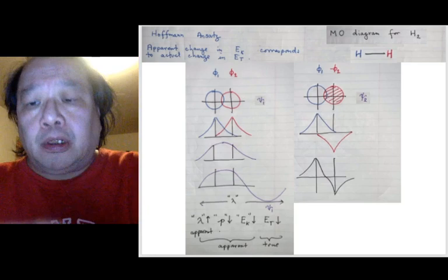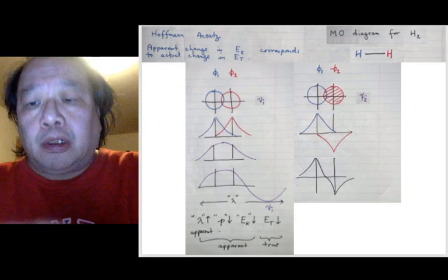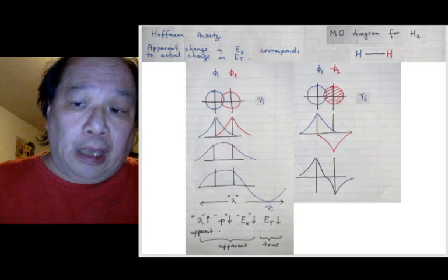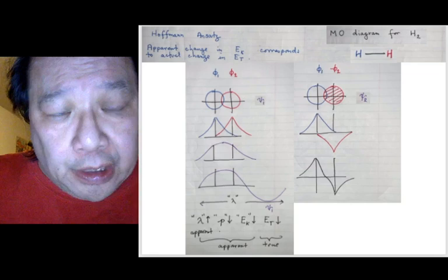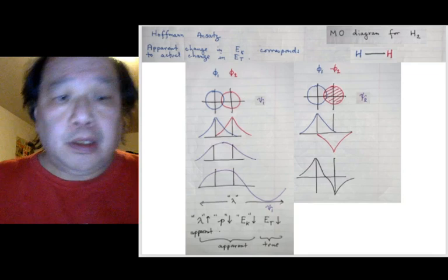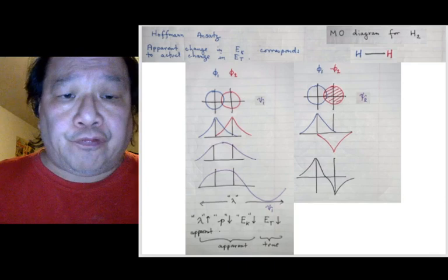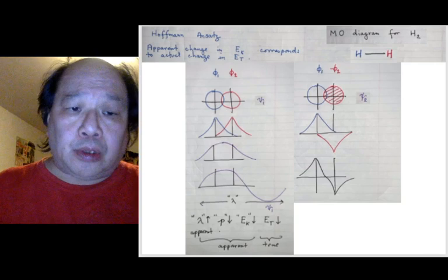And is lambda now longer or shorter than before? Put it in chat. Is the apparent lambda longer or shorter than before? And the answer is the apparent lambda is shorter. If the apparent lambda is shorter, what's happened to the apparent momentum? The apparent momentum is bigger. What's happened to the apparent kinetic energy? The apparent kinetic energy is bigger. And therefore, the true total energy is higher or lower. Put it in chat. The true total energy is higher.